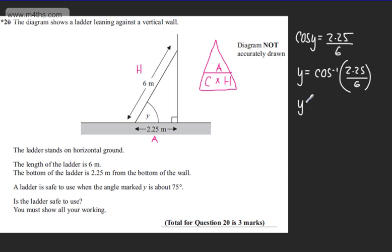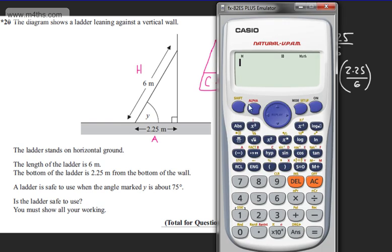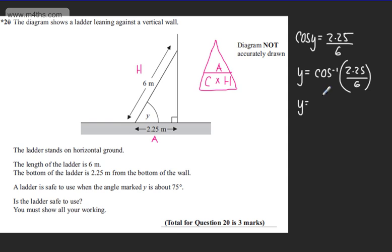I'm going to find a value for Y and we can do this in the calculator. Make sure you're in degrees mode - shift mode 3. You'll have a little D here for degrees. To do the inverse cosine, we press shift cos, setting up the fraction 2.25 divided by 6. That's going to give us 67.97, so we can say 67.97 dot dot dot.